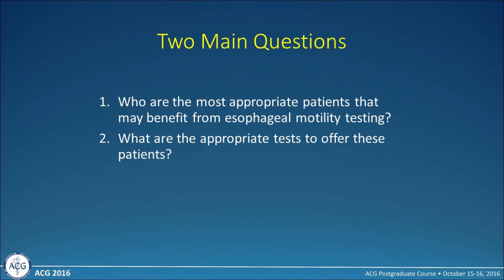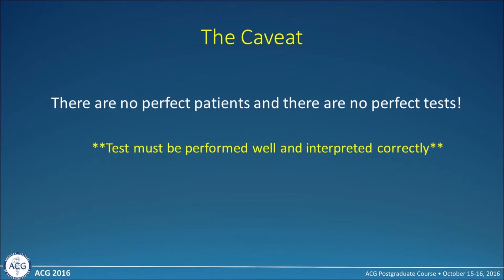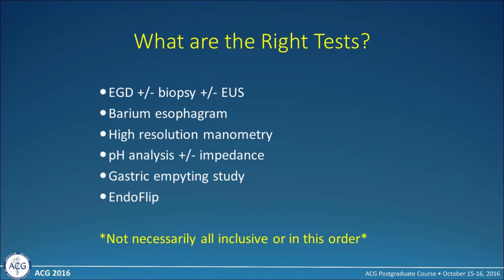The two main questions are: who are the most appropriate patients that may benefit from motility testing, specifically of the esophagus, and what are the appropriate tests to offer these patients? The caveat is there are no perfect patients and no perfect tests. What's really important is that the test has to be done well and interpreted correctly. A lot of our tests have become seemingly easier to interpret, but there's still a lot of hands-on work needed to make sure we're interpreting them correctly.